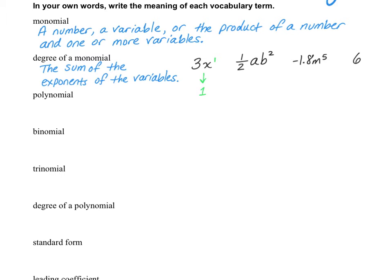If I look at the next one, I have one-half a b squared. The b has two, and the a has an invisible one. So we're going to add one plus two and get three as the degree of the monomial. Negative 1.8m to the fifth just has a degree of five. And the plain number six has a degree of zero, because we could say it is the same as six x to the power of zero.